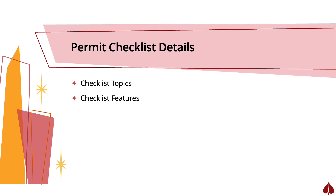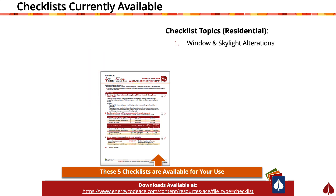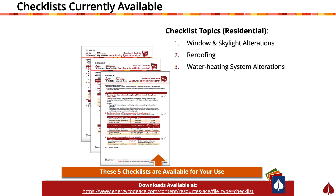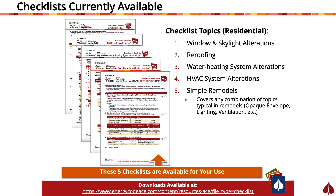Let's look at how they work and the types of projects they can assist you with. There are five checklists included in your climate zone packet. Each checklist will cover the 2022 Energy Code requirements for a different type of residential alteration project. These projects are: window and skylight alterations, re-roofing, water heating system alterations, heating, ventilation, and air conditioning system alterations, and simple remodels.